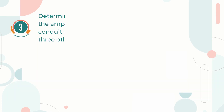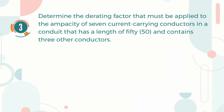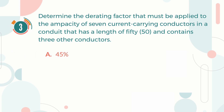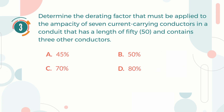Number 3. Determine the derating factor that must be applied to the ampacity of 7 current-carrying conductors in a conduit that has a length of 50 and contains 3 other conductors. A. 45%. B. 50%. C. 70%. D. 80%.